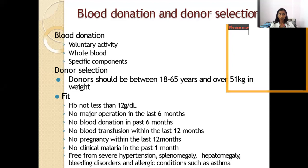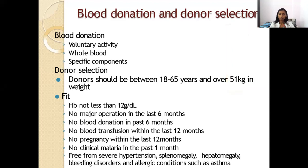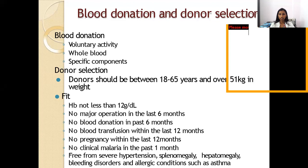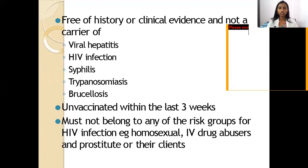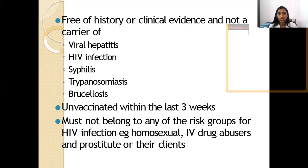The donor must follow all fitness criteria and should also be checked for hypertension, splenomegaly, hepatomegaly, bleeding disorders, and allergic conditions like asthma. If the donor has any of these, they should not be donating blood. There should be no history of the donor being a carrier of viral hepatitis, HIV infection, syphilis, trypanosomiasis, and brucellosis.